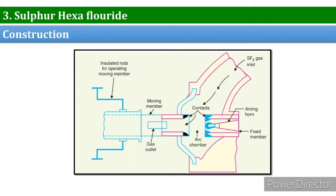Now we will discuss sulfur hexafluoride, commonly known as SF6, circuit breakers. As the name suggests, SF6 gas is used as the arc quenching medium. SF6 is an electronegative gas and has a strong tendency to absorb free electrons. The contacts of the breaker are opened in a high-pressure flow of SF6 gas and an arc is struck between them.